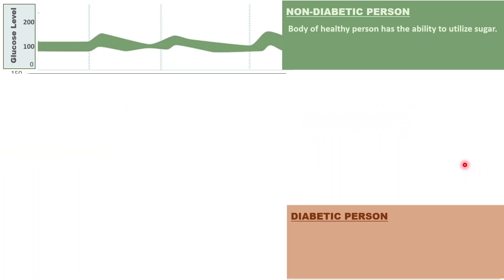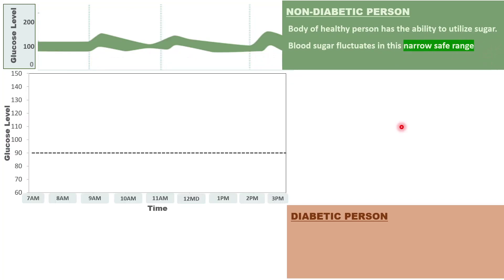The body of a healthy, non-diabetic person has the ability to utilize sugar, and the blood sugar level fluctuates in a narrow safe range. If a person has a breakfast with a lot of calories, his blood sugar level will rise to around 150 mg per deciliter and after some time blood sugar will begin to fall. After around 3 hours, it will fall back to the fasting level and continue to fluctuate around the baseline of around 90 mg per deciliter until he eats again. If he does not eat anything for the whole day, the blood sugar will not fall further. Thus his blood sugar fluctuates in a narrow safe range.